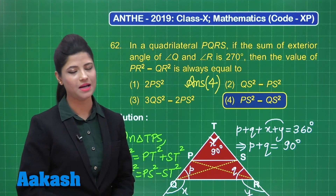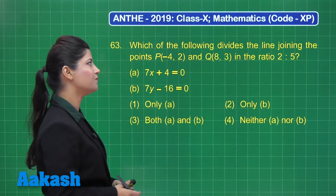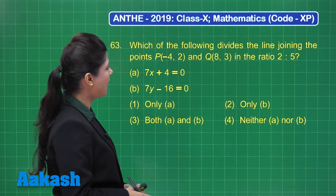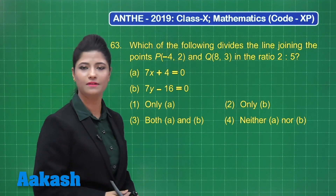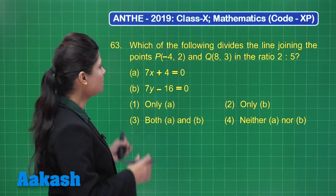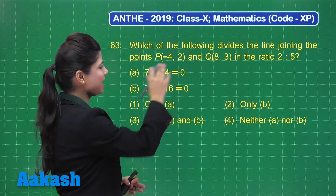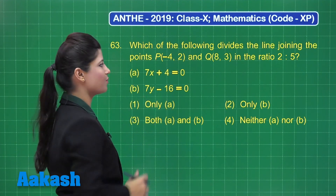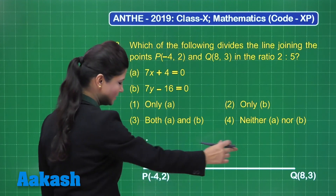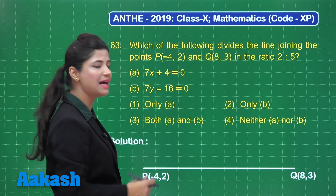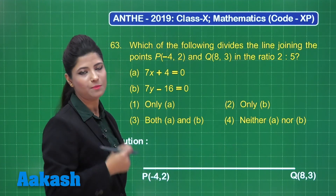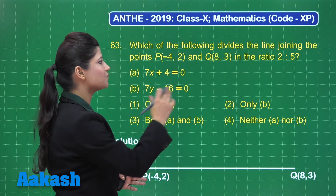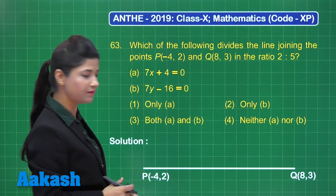Let us take up question number 63. This question asks which of the following divides the line joining points P and Q in the ratio 2 to 5. We need to find the lines dividing line segment PQ in the ratio 2 to 5 from the given options. Point P has coordinates minus 4, 2 and point Q has coordinates 8, 3.